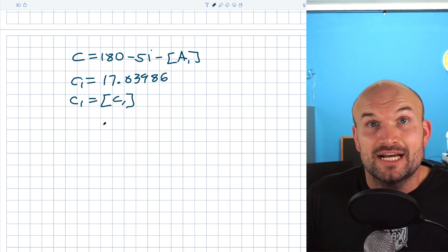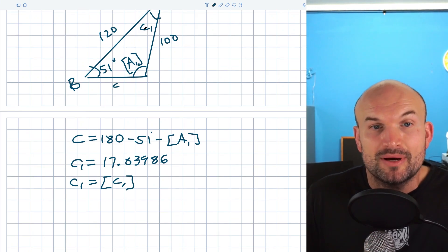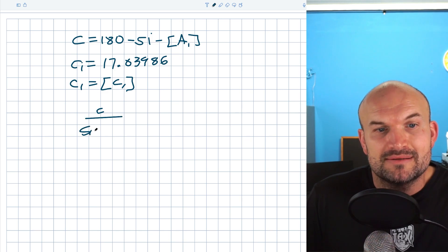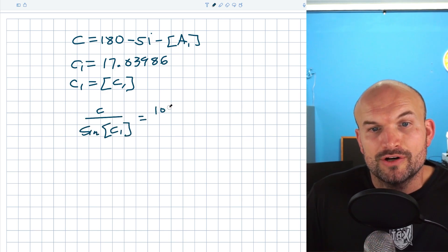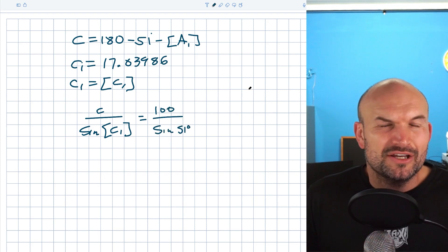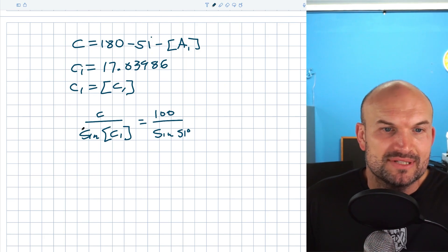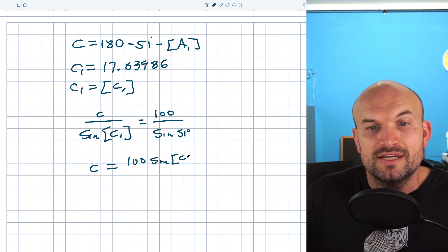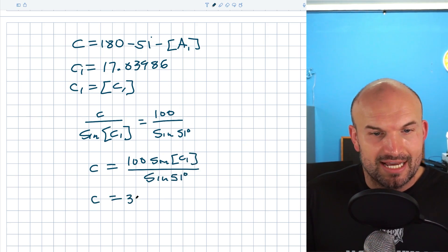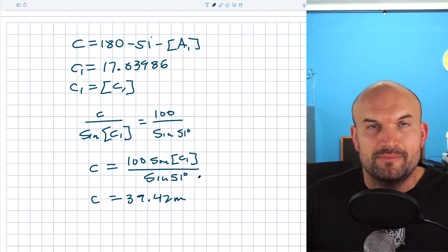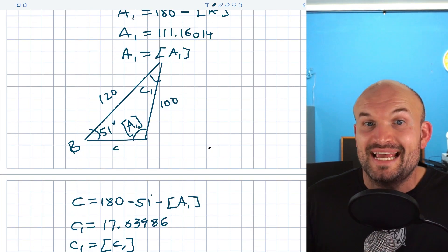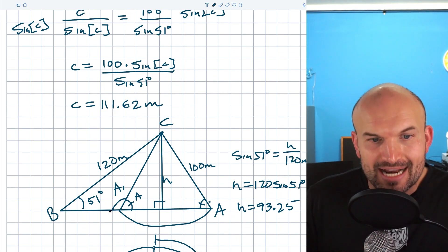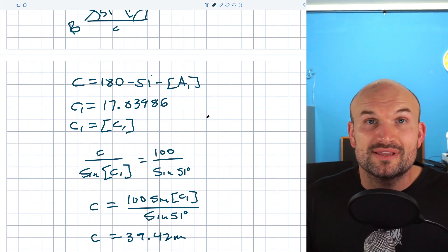The last thing we need to do is find the missing side length c for Case 2. We have the relationship: c over sine of stored C1 equals 100 over sine of 51 degrees. To solve for c, multiply both sides by sine of stored C1: c equals 100 times sine of stored C1, divided by sine of 51 degrees. That gives c equals 39.42 meters. That should be much shorter than the Case 1 answer for c, and indeed the Case 1 value was 111.62 — so roughly 39 makes sense.